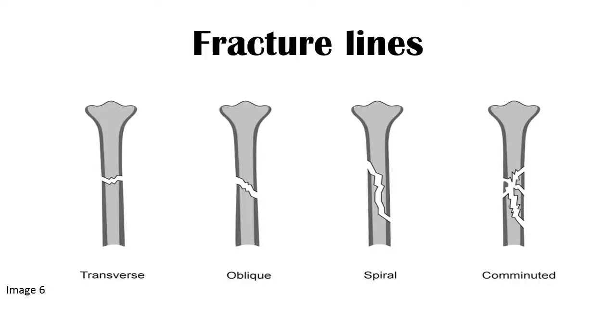There are many ways in which fracture lines can be described. The main ways include transverse, oblique, spiral, comminuted, or otherwise known as complex.